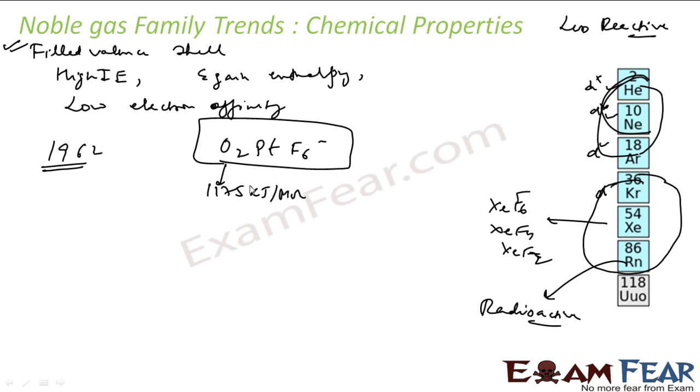But he found that the ionization energy of oxygen is 1175 kilojoule per mole. And he also knew that the ionization energy of Xenon is 1170 kilojoule per mole. Both are almost same. So he was very much sure that he can actually form XePtF6 kind of structure.